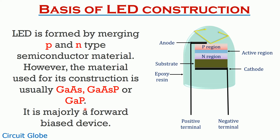We can see in the figure shown here that the whole structure is enclosed in an epoxy resin hemispherical shell. The reason to use this shell is to have maximum radiation emission from the top surface of the LED. Also, during emission, some part of light reaches the lower portion of the structure. So we use a gold film, which shows the cathode connection, to have sufficient reflection from the bottom of the surface. This is the reason why we achieve maximum radiation emission from the top surface of the LED.